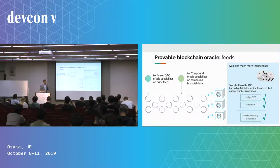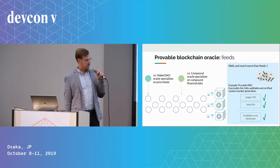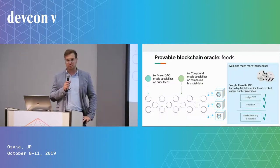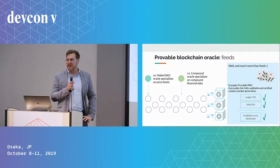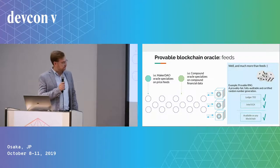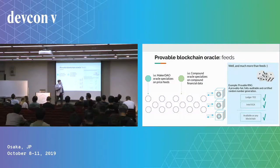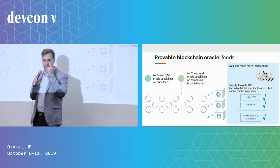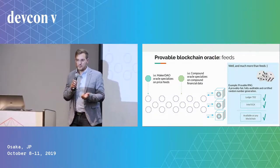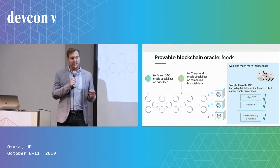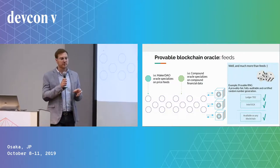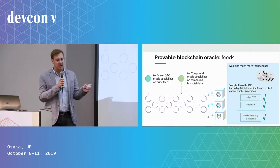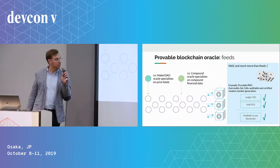We have focused a lot on the random number generation use case because it's a strong need and one of the first applications to get traction in the Ethereum space, and before that in the Bitcoin space. If you think of Satoshi Dice, which was the first application on Bitcoin that caused a spike in transaction volumes in 2012, the technologies we use for the provable random number generator include the Ledger Nano S. Most know it as the hardware wallet to secure ETH or other tokens, but the security guarantees it provides can be used for custom applications — you can implement anything within the safe boundaries of the Ledger Nano S while proving to third parties that the application was running on it with no alterations.